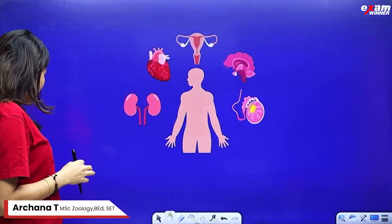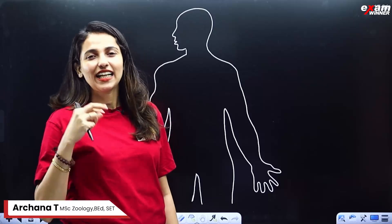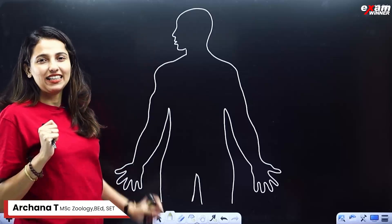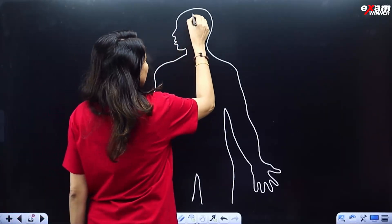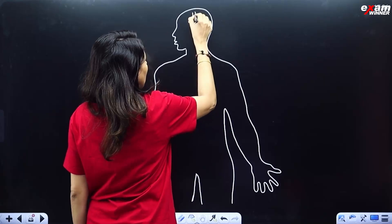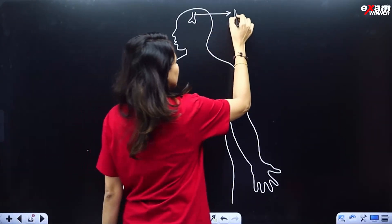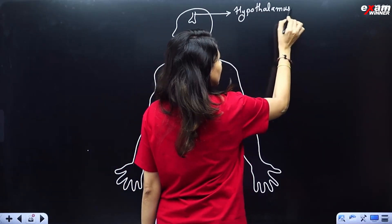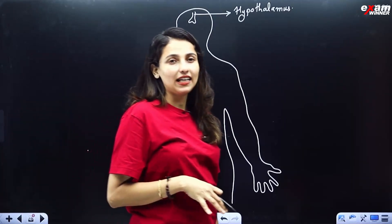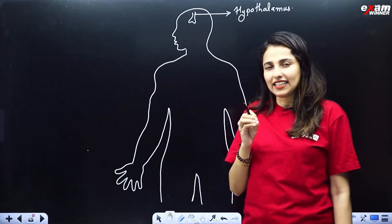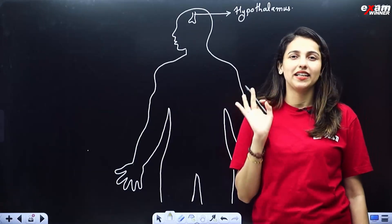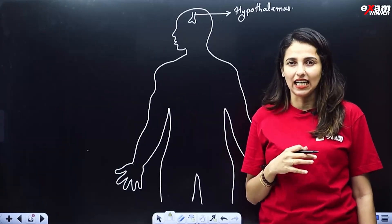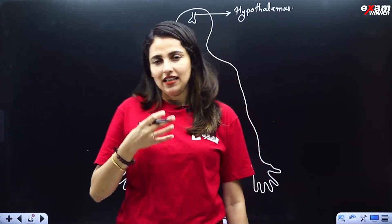We are going to talk about hormones in our body. The body has glands. These glands are endocrine glands — they don't have ducts, they are ductless glands. They secrete hormones directly into the blood.